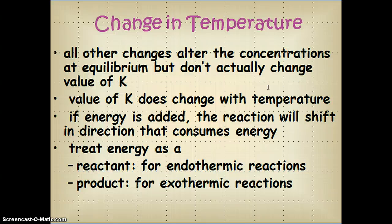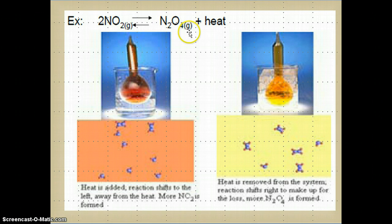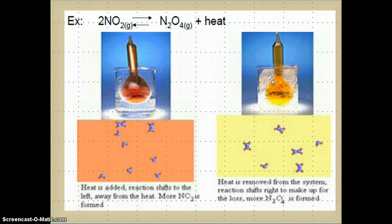On the next slide we have the same NO₂ and N₂O₄ reaction, and we see it's exothermic, so we can treat heat as a product here. If we added heat, then the reaction would shift back to the left — towards the NO₂ — in order to get rid of some of that excess heat. If we were to put the system in a container of ice, the system would want to make more heat because heat has been removed, so it's going to make more N₂O₄.